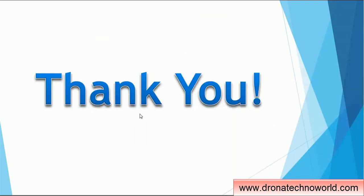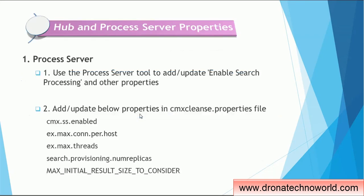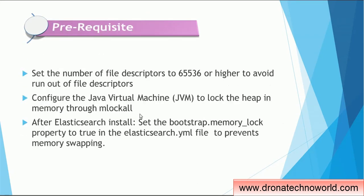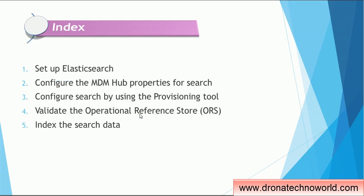Those are the details about the configuration of Elasticsearch. I hope you got all the points and a rough idea of what steps are required and which important sections to concentrate on. To recap: first, set up the Elasticsearch software itself; second, configure the MDM hub server and process server properties; third, configure the provisioning tool; fourth, validate the ORS; and fifth, index the data. If you have any questions about Elasticsearch or any other MDM-related topic, please mention them in the comment section. Thank you for watching, and have a nice time.